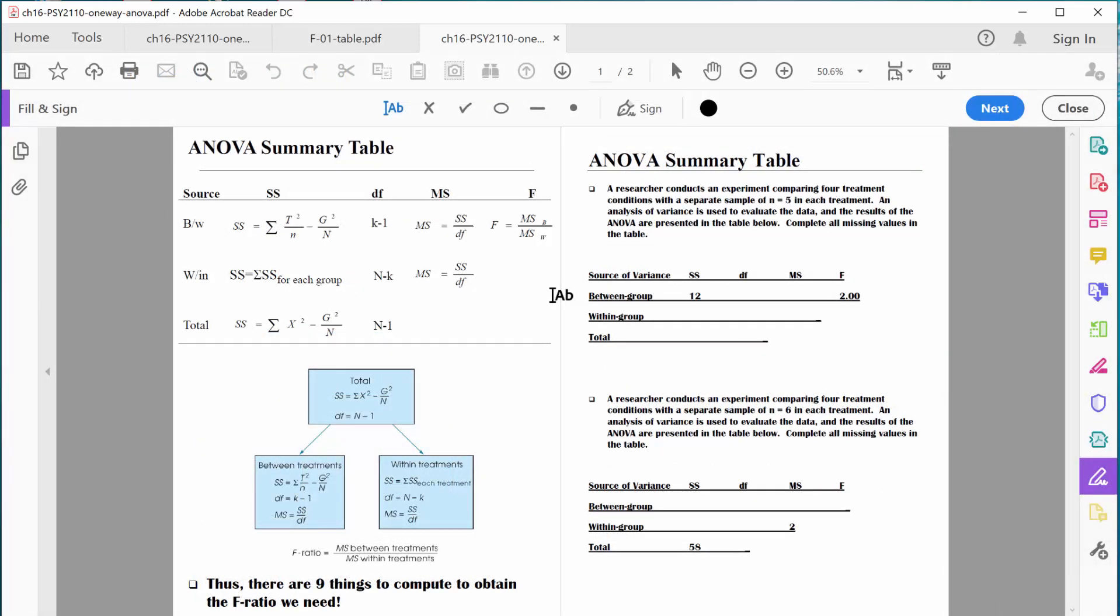So it's usually easiest to start with the simple formulas that we see, like degrees of freedom. So we learned that there are four different treatment groups. If there are four groups, remember that's K, 4 minus 1 equals 3 degrees of freedom between. So we can fill that in right here. All right, so we've got three degrees of freedom between groups.